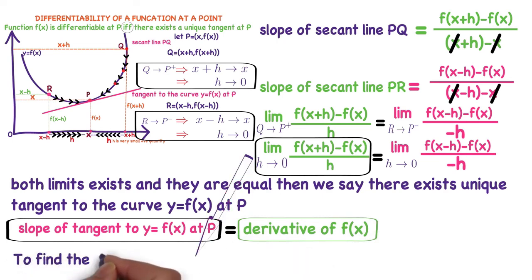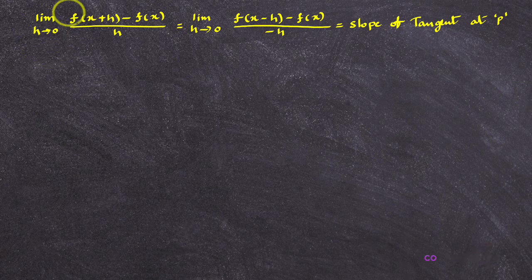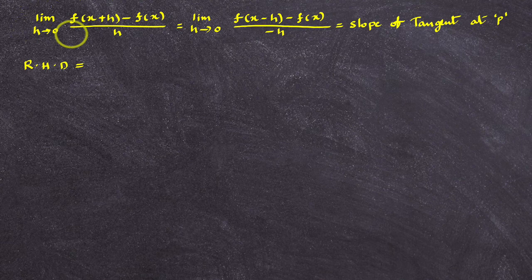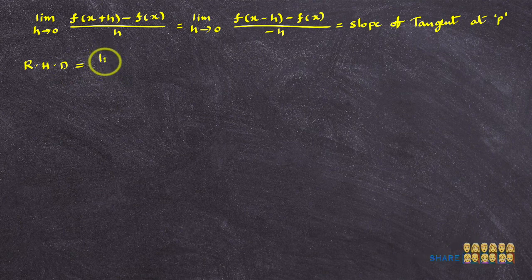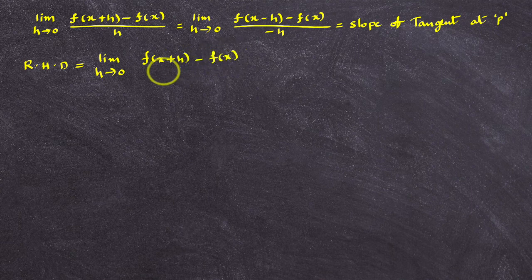To find the derivative of a function by using the first principle, we use this formula only: limit h→0 of [f(x+h) − f(x)] / h. This is known as the first principle of derivative, and it is also called the right-hand derivative.